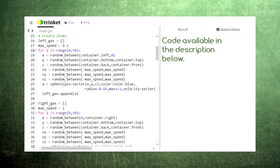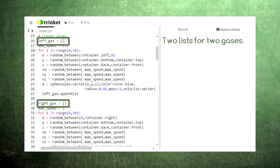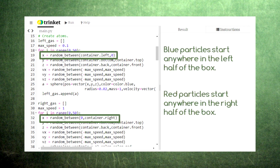Here is the same code we used in the previous episode, but this time we're creating two lists of particles. The blue gas will start on the left side of the box, and the red gas will start on the right side of the box.